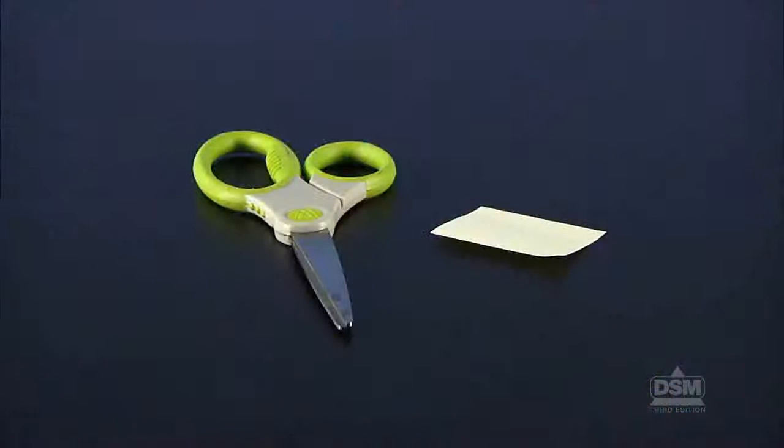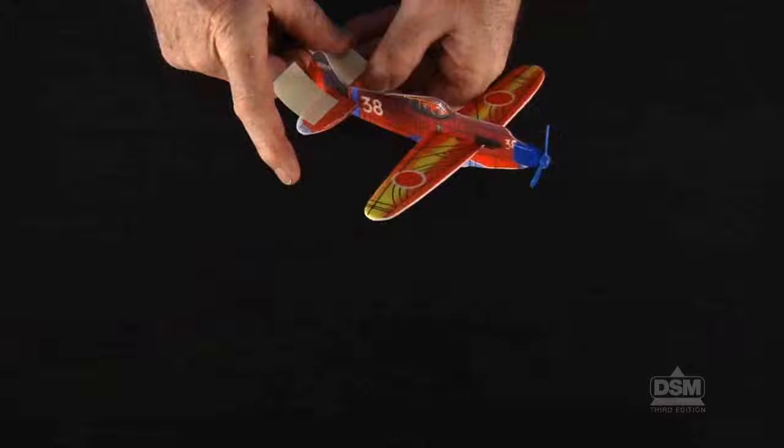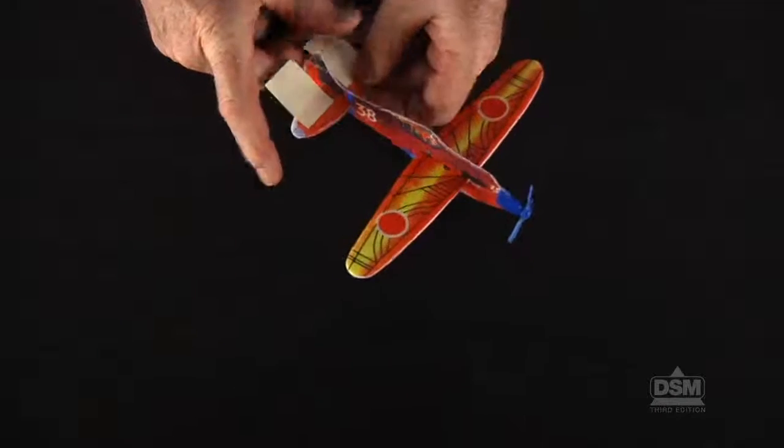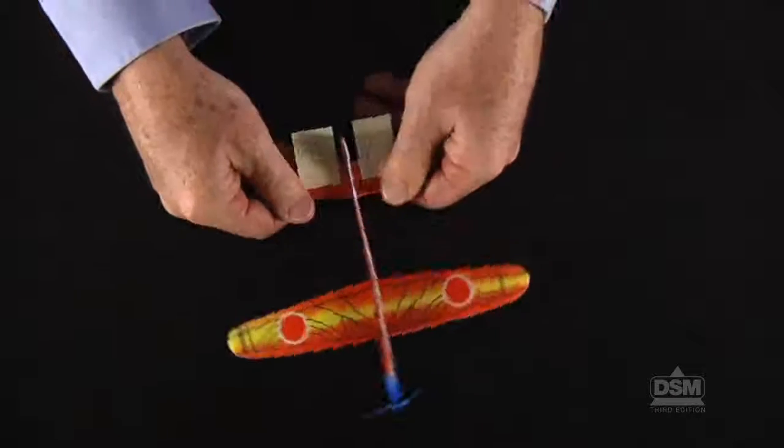Distribute a sticky note and a pair of scissors to each team, and instruct students to cut the note in half and press each piece on the horizontal stabilizer of the tail to make elevators. Ask students to think about how the air would flow past the plane with the elevators in different positions.